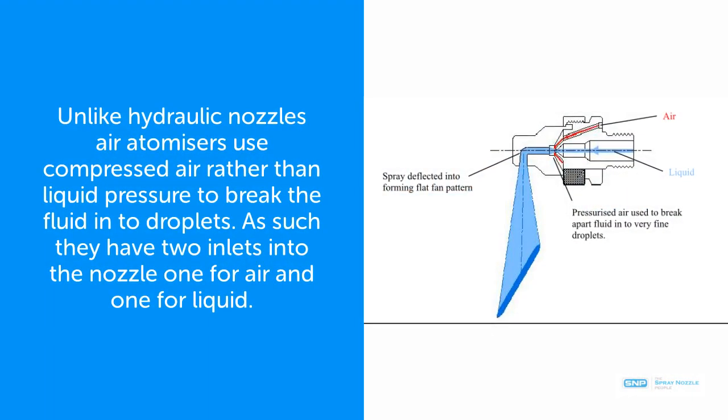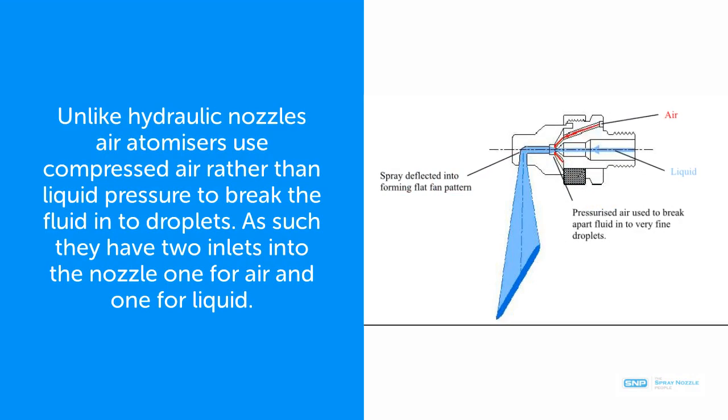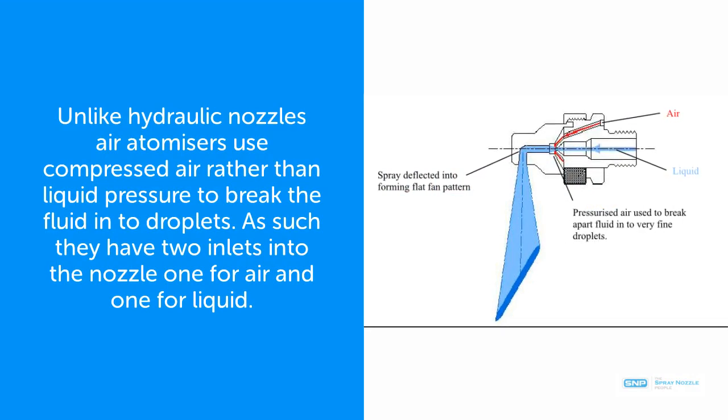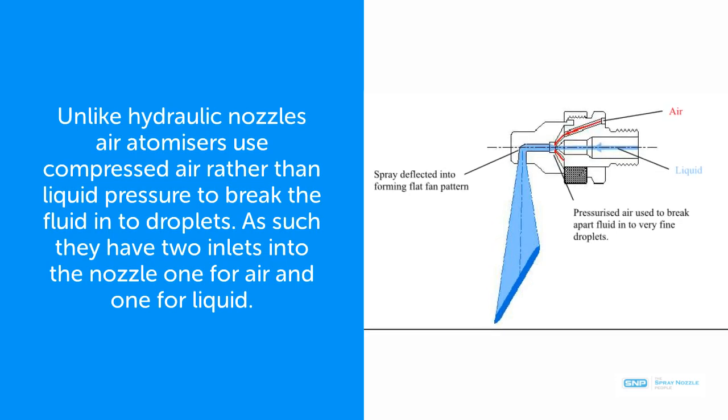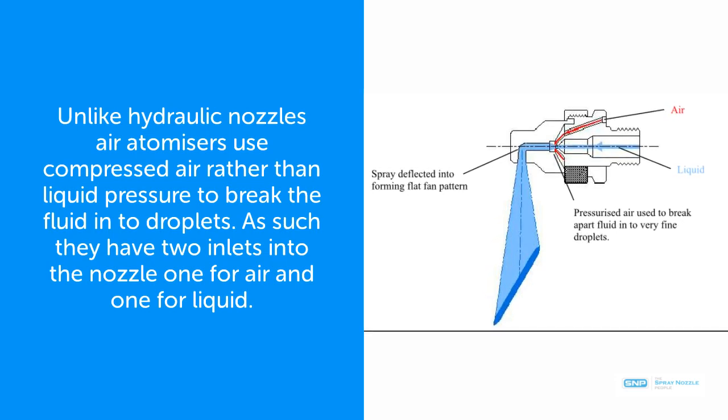Unlike hydraulic nozzles, air atomizers use compressed air rather than liquid pressure to break the fluid into droplets. As such, they have two inlets to the nozzle, one for the air and one for the liquid.